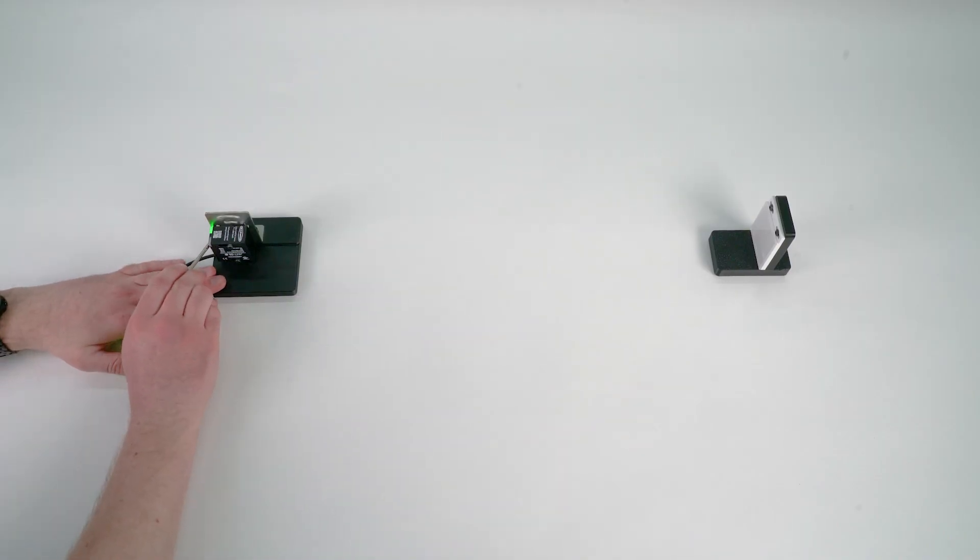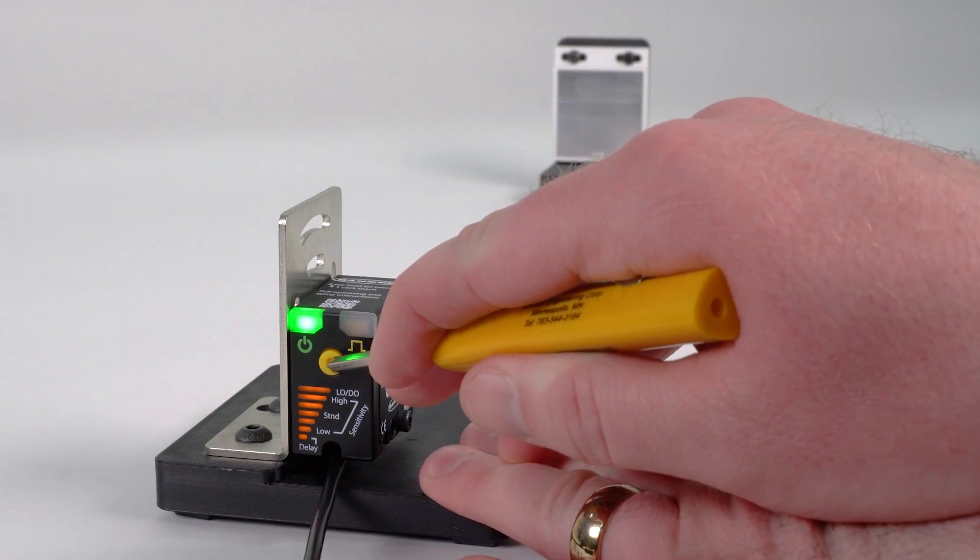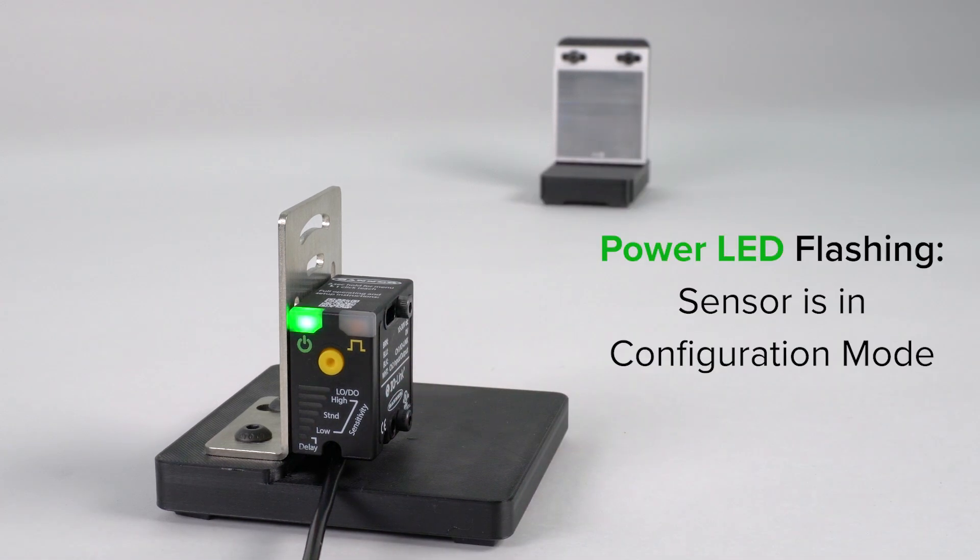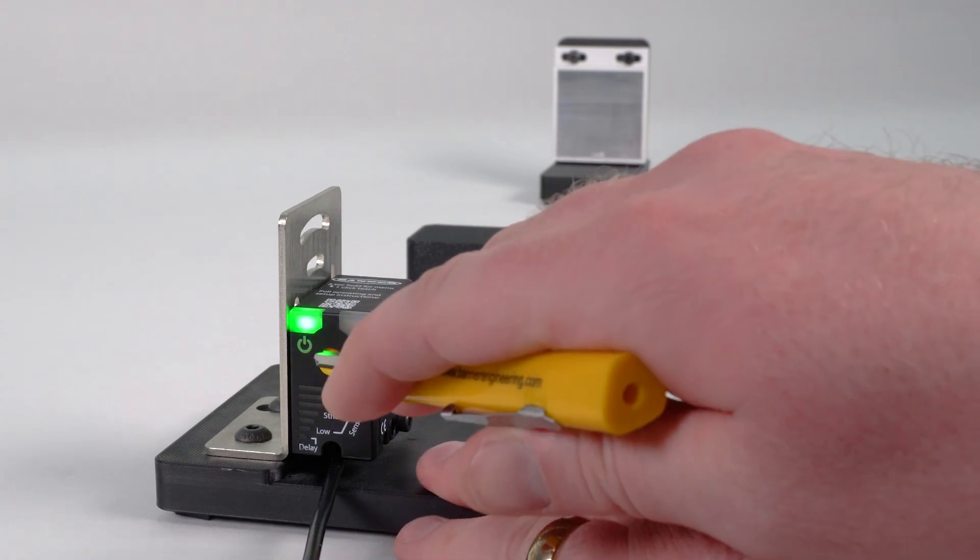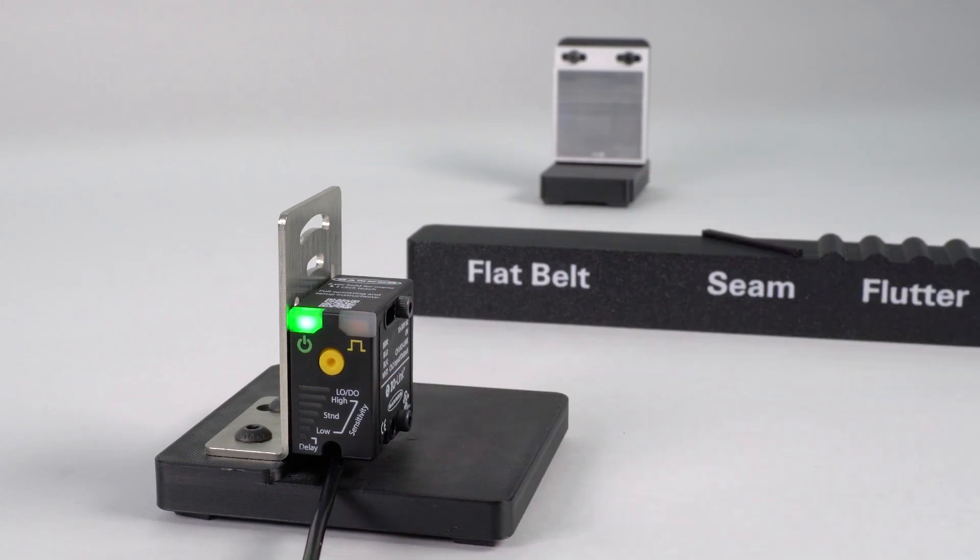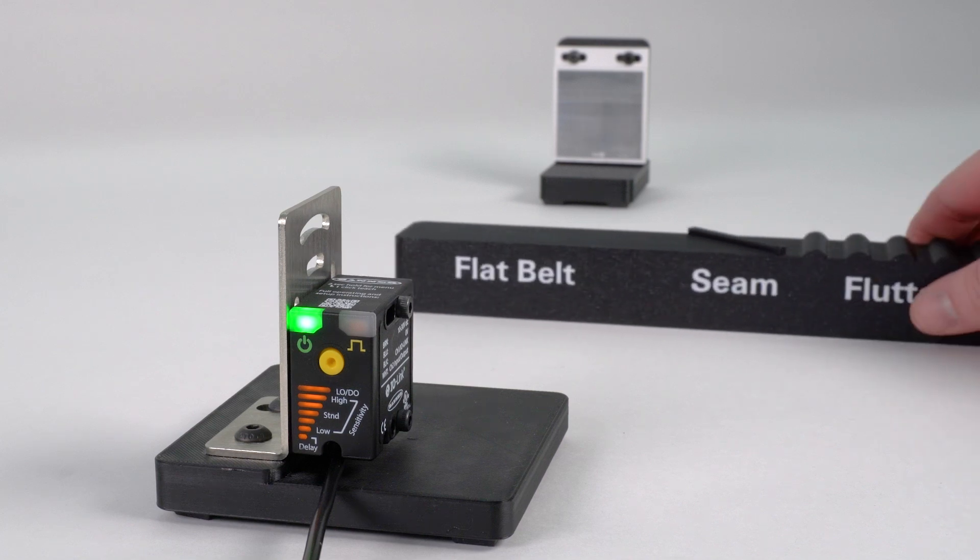Begin by pressing and holding the teach button for two or more seconds until the green power LED starts flashing. This puts the sensor into configuration mode. Present the normal condition to be filtered out and press the teach button once. The green and amber LEDs will flash twice to confirm the taut condition has been accepted and the sensor will return to run mode.